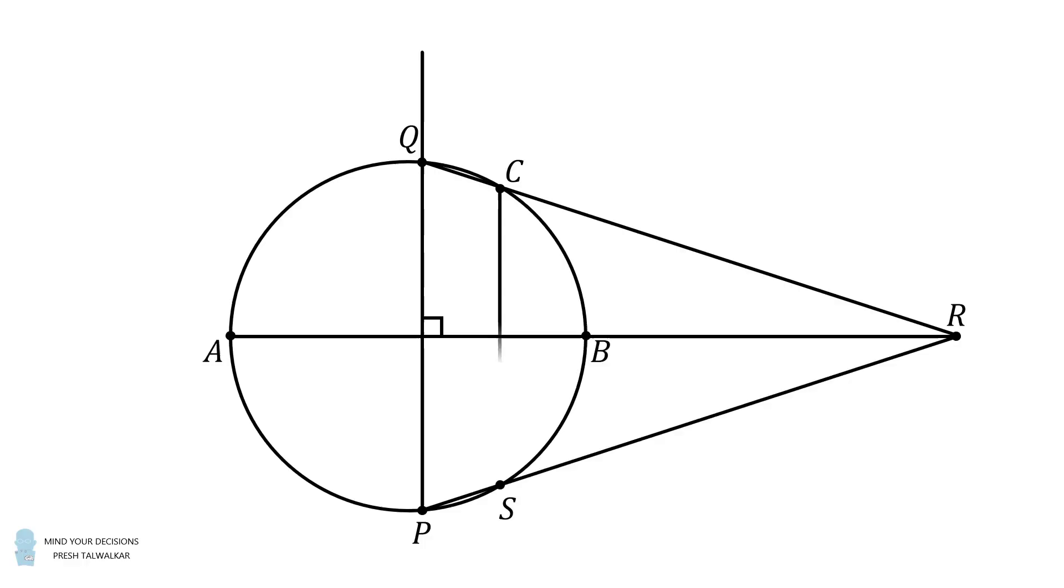We then will connect CS. Because C and S are reflected points about the diameter AB, they will meet the diameter at the point D, and that will be at a right angle. And thus, we have constructed CD that's perpendicular to AB, and all we've used is a straight edge and some interesting geometry concepts. What an amazing construction!